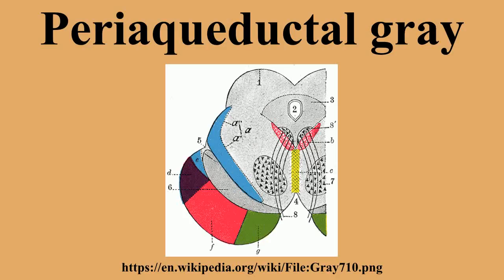The periaqueductal gray is the primary control center for descending pain modulation. It has enkephalin-producing cells that suppress pain. The periaqueductal gray matter is the gray matter located around the cerebral aqueduct within the tegmentum of the midbrain. It projects to the nucleus raphe magnus and also contains descending autonomic tracts. The ascending pain and temperature fibers of the spinothalamic tract send information to the PAG via the spinomesencephalic tract.